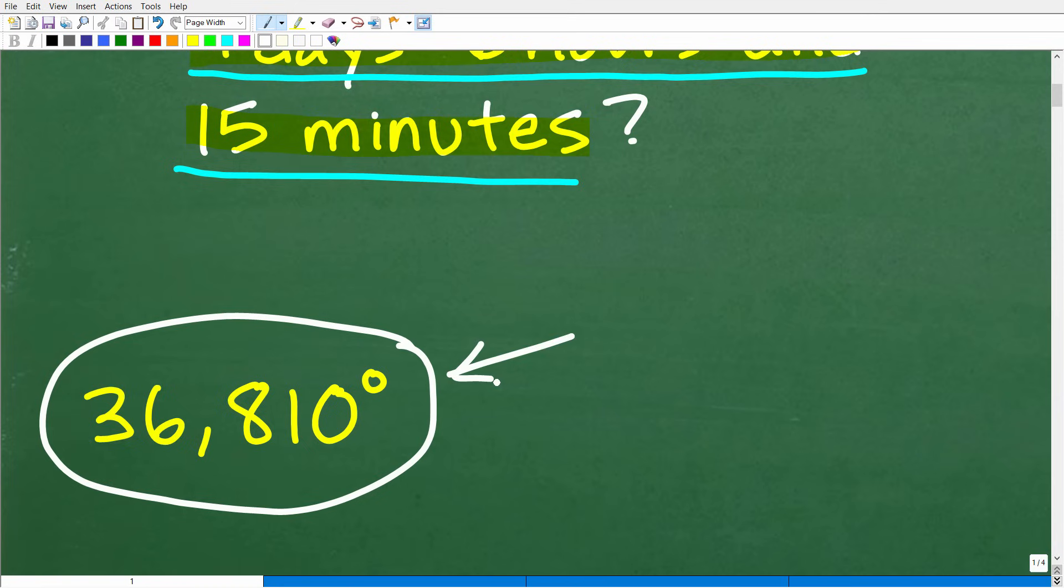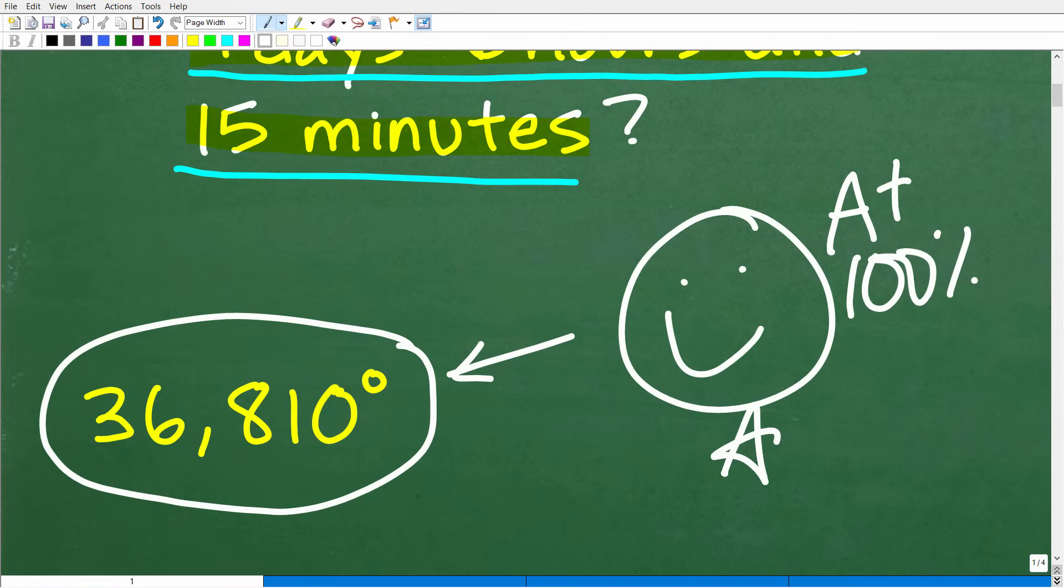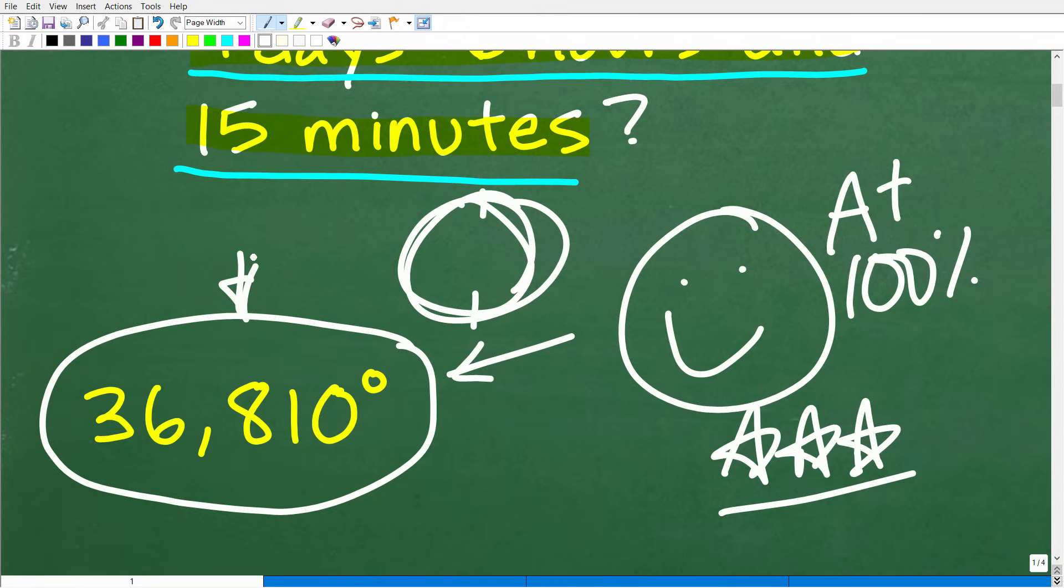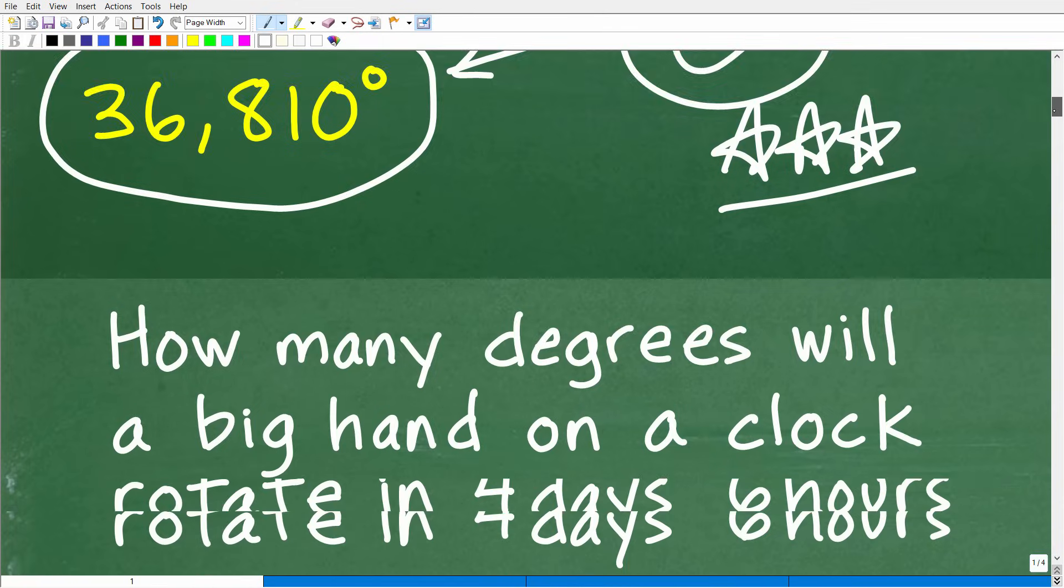The correct answer is 36,810 degrees. Alright, now, if you got this right, we have to celebrate by giving you a nice little happy face and a plus 100% and multiple stars. So you can brag to your friends and family that yes, indeed, you know how to read a good old fashioned clock with a big hand and little hand, but more importantly, you understand how to read the number of degrees when there is more than one rotation going on in a circle.